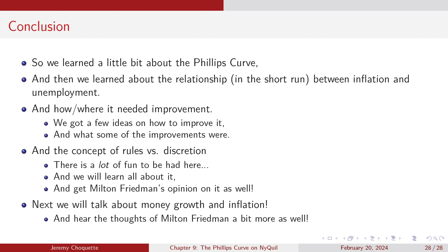Next, we're going to do some other stuff. I think it's going to be Ricardian equivalence — actually, yes, we did money, growth, and inflation in the last chapter, so this was slightly out of order. Next chapter, we're talking about Ricardian equivalence and how the government is just the kid that sits in the corner eating glue all day. Thanks for watching.